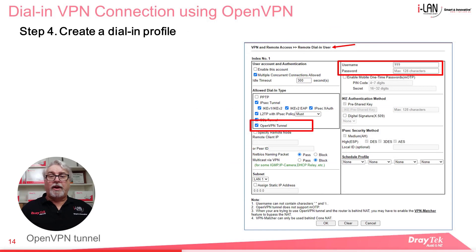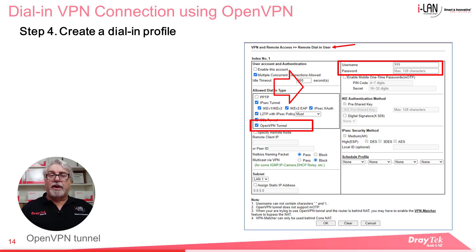Then go to VPN and Remote Access, Remote Dial-in User, and create a new profile. You'll need to give it a username and password, and also make sure OpenVPN is selected as the allowed dial-in type.